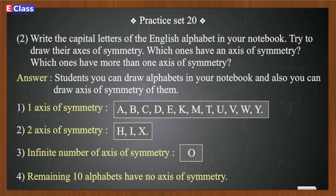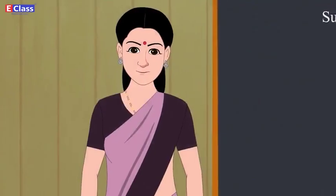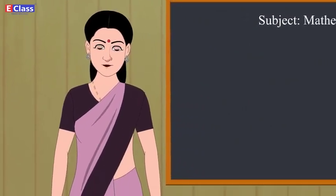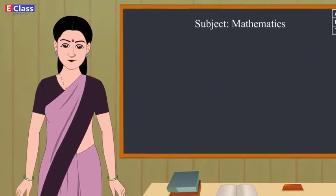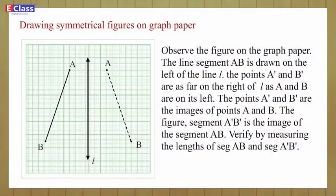Now students, let's learn how to draw symmetrical figures on graph paper. Drawing Symmetrical Figures on Graph Paper: Observe the figure on the graph paper. The line segment AB is drawn on the left of the line l.